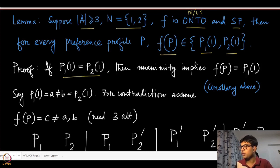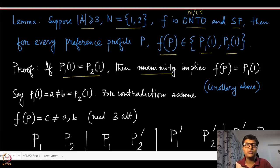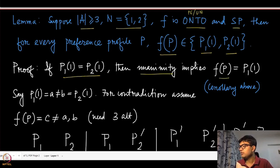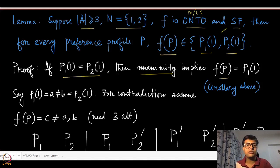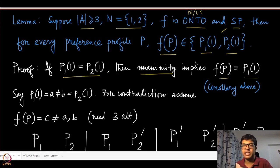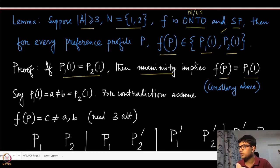If these two alternatives happen to be the same, unanimity implies that this should be the outcome, so the lemma holds trivially. Even though we have stated ontoness and strategy-proofness in the theorem statement, we also know from the previous corollary that it is equivalent to say this is Pareto efficient or unanimous, and we are going to use all of these results interchangeably in our proof.